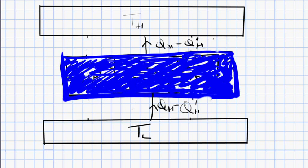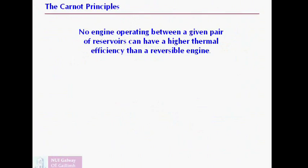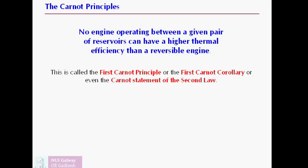So if we've created something that's impossible, we must have done something wrong in our setup. And the weak link in our setup is the point where we assumed we could make a more efficient engine than the original engine, which was reversible. So from this, we conclude that it's impossible to have an engine that is more efficient than a reversible engine between a given pair of reservoirs. That is called the Carnot principle, the first Carnot principle, or it goes by some other names too.